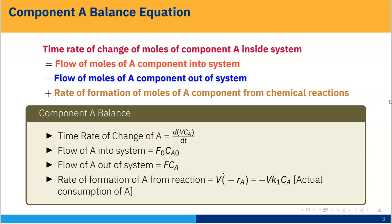The time rate of change of moles of component A inside the system equals the flow of moles of A into the system, minus the flow of moles of A out of the system, plus the rate of formation of moles of A from chemical reaction. The time rate of change of A is d(VCa)/dt. The flow of A into the system is F0·Ca0.